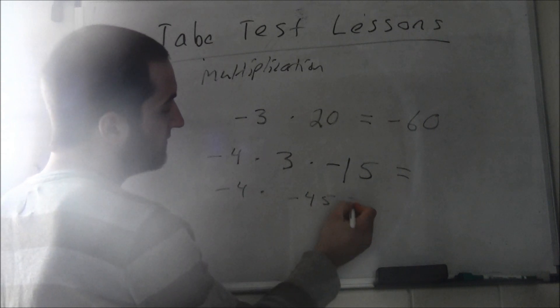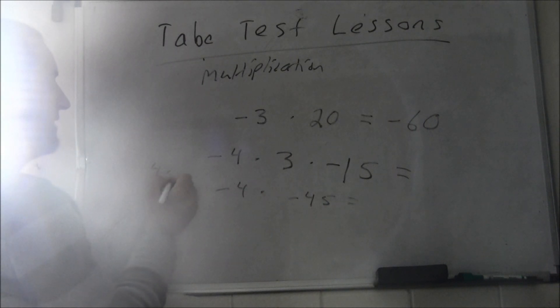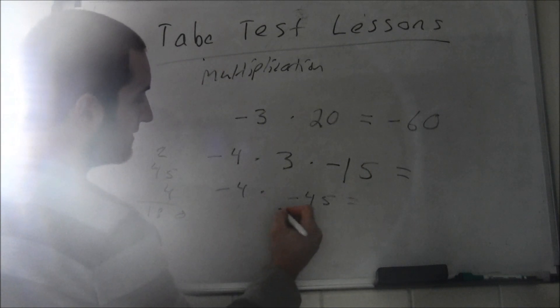That's negative 45. So you got negative 4 times negative 45. If you can't do it in your head, just do it over here the long way: 4 times 45 is 180. Negative times negative is positive, so it's positive 180.